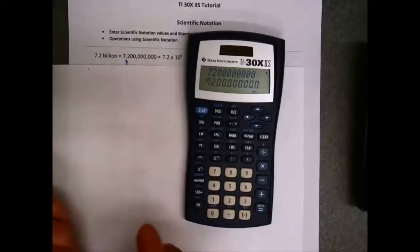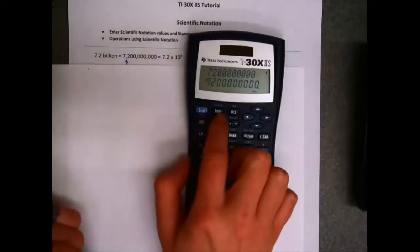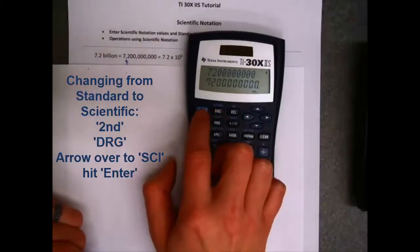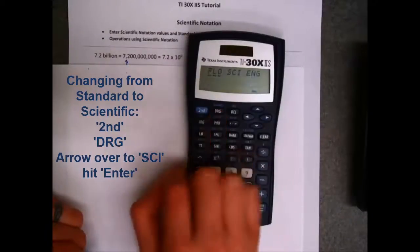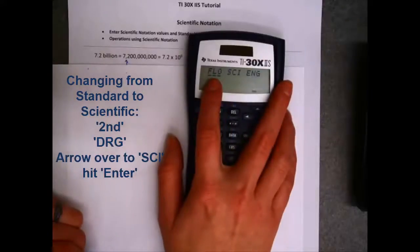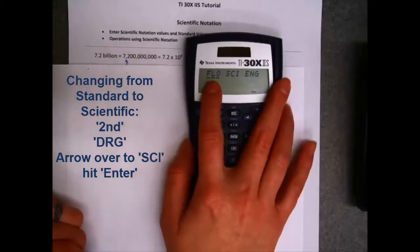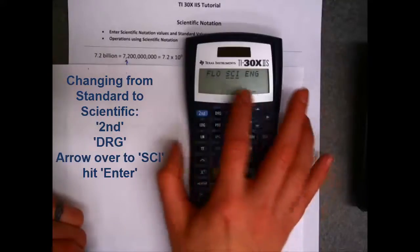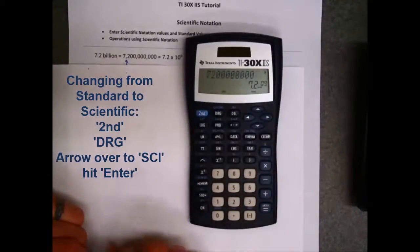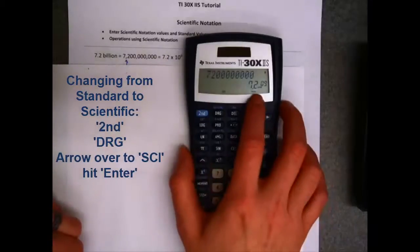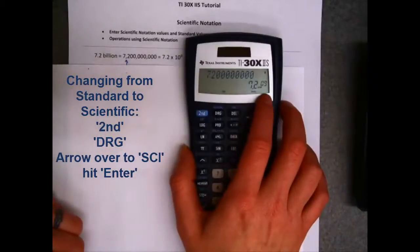So to display that in scientific notation, I want to change to scientific notation setting. So if you hit your second button, and this button that says DRG has sci slash engineering above it. This FLO setting is for when you have it in regular standard notation. If you arrow over to scientific notation and hit equals or enter, it actually displays this value in scientific notation with times 10 to the 9th.